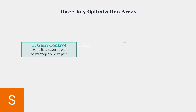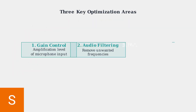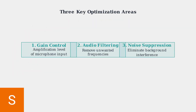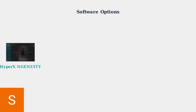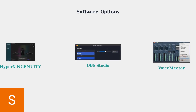To optimize your HyperX Cloud3 Wireless Microphone, focus on three key areas: gain control, audio filtering, and noise suppression. These settings can be adjusted using various software applications. HyperX NGenuity is the native software, while OBS Studio and VoiceMeeter offer advanced third-party options.